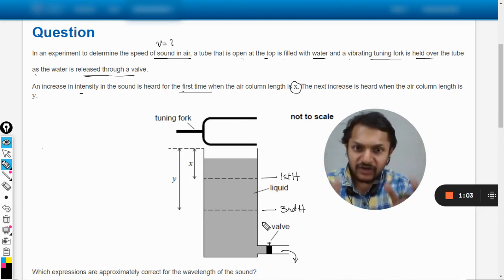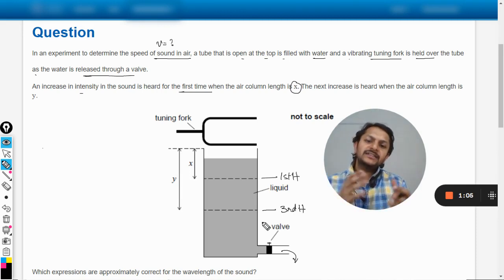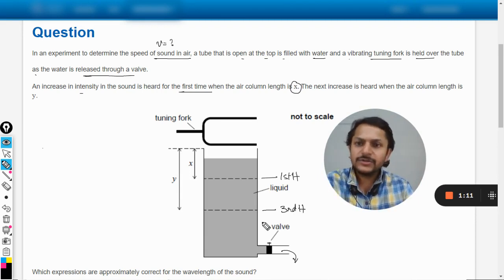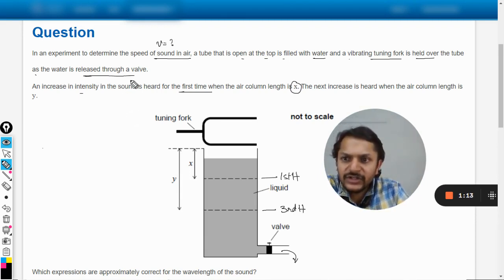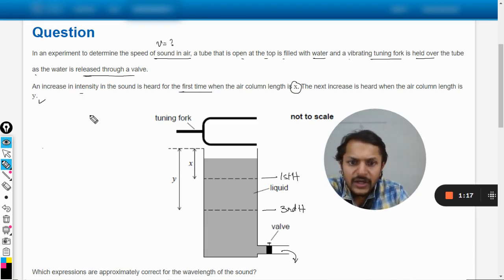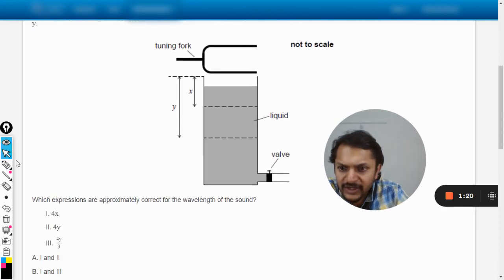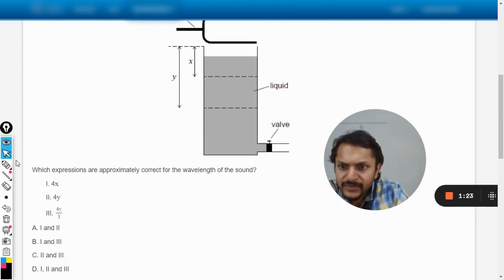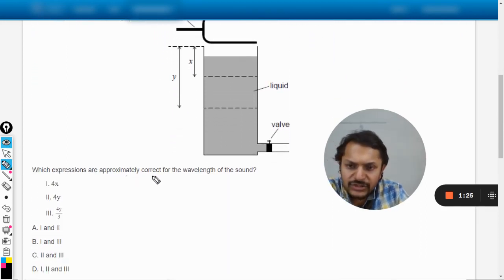Right students, please be careful here. First harmonic and the even harmonics are not present in this case when one end is open and one end is closed. So when the water leads through the valve and this becomes y, the next increase is heard. Which expression is approximately correct for the wavelength of the sound? We want to find the wavelength of the sound.